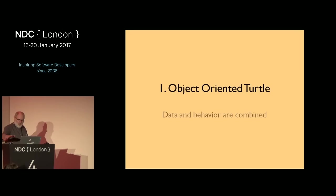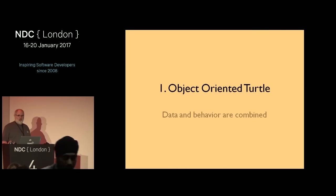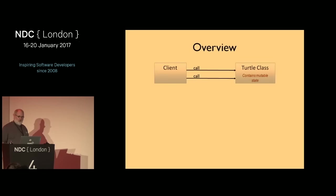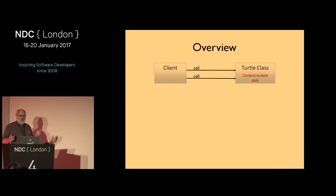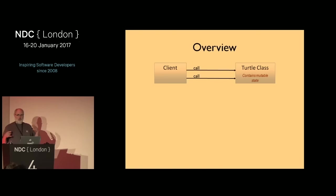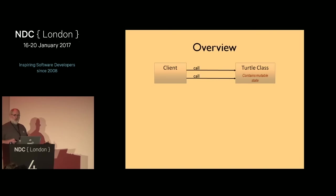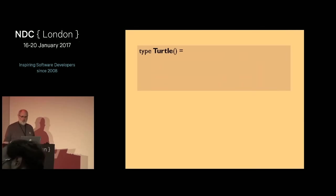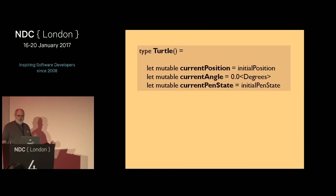So how can we have 13 different implementations of this API? Let's start with the object-oriented turtle. In an OO turtle, the data and the behavior are combined into one object. You have a turtle class and a client that calls it. The turtle needs to keep track of its position, the angle it's pointing, and whether the pen is up or down. In the OO model, the turtle state is inside the turtle and it's mutable — the client doesn't have access to it.